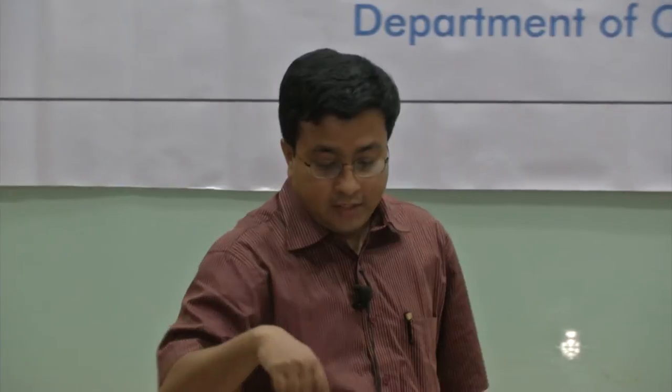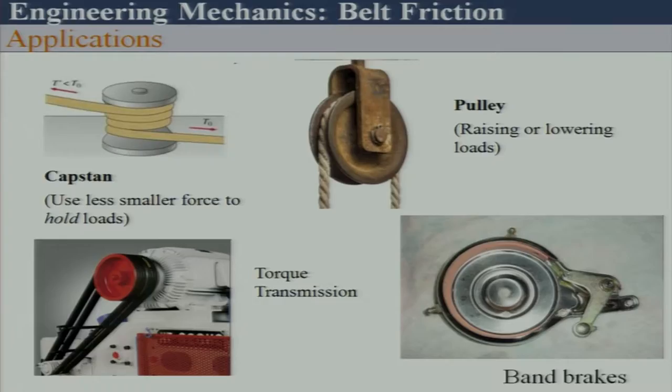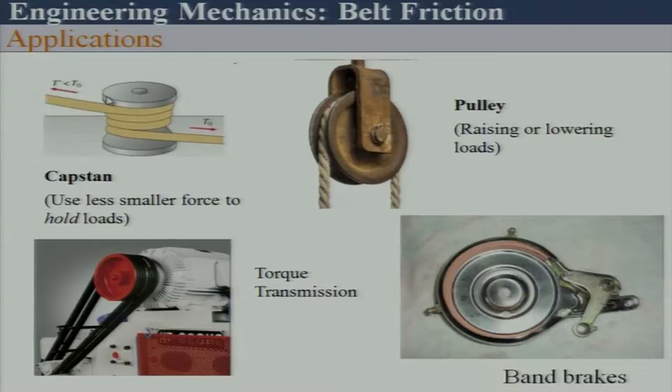So many applications are there. The first example is a capstan, or what we call a bollard. For example, when we are going to anchor a boat or a ship and it comes to the parking area, the person who is actually going to hold it has to apply a very small force in order to stabilize the large boats or ships. So tension on both sides will differ in that case.